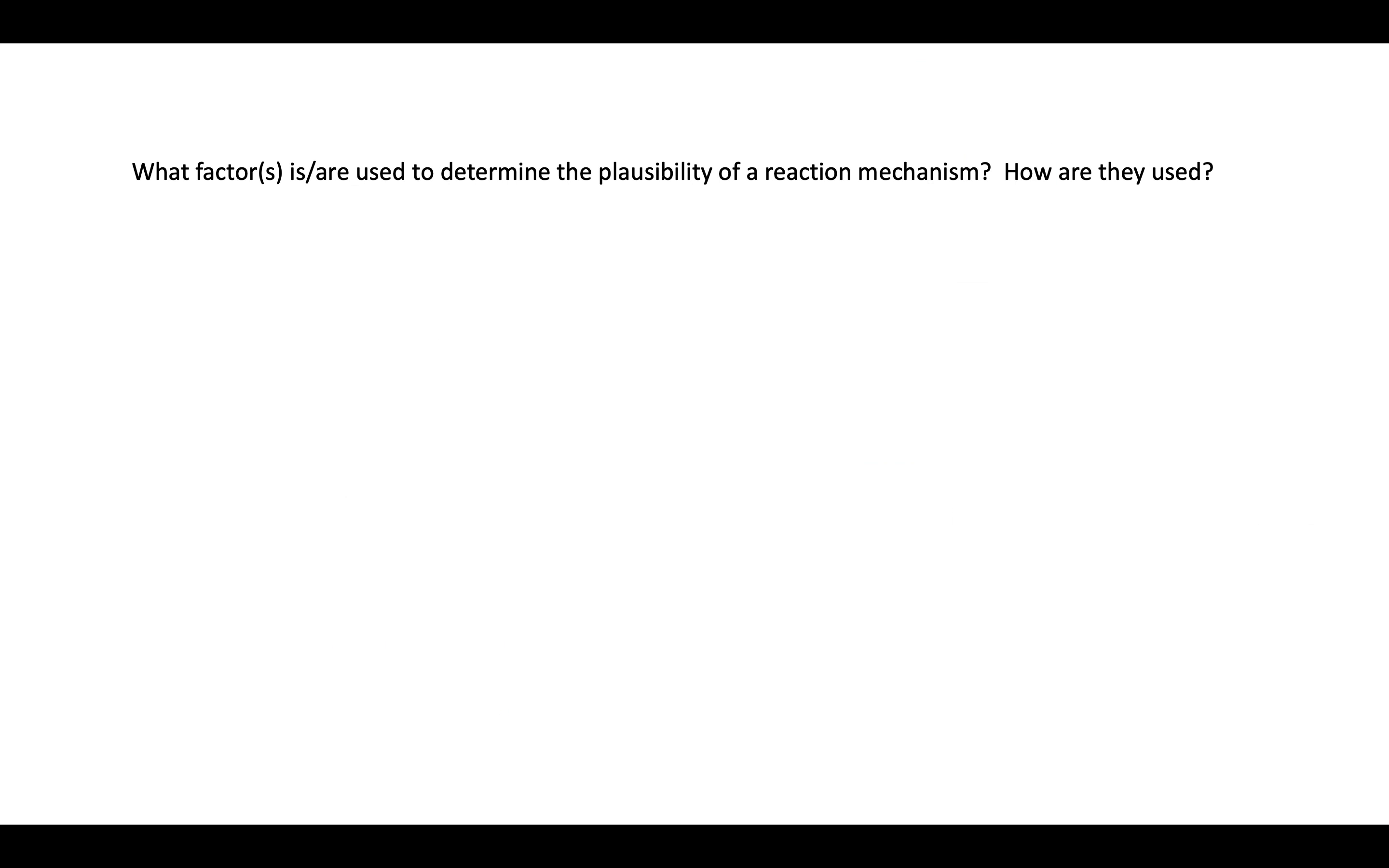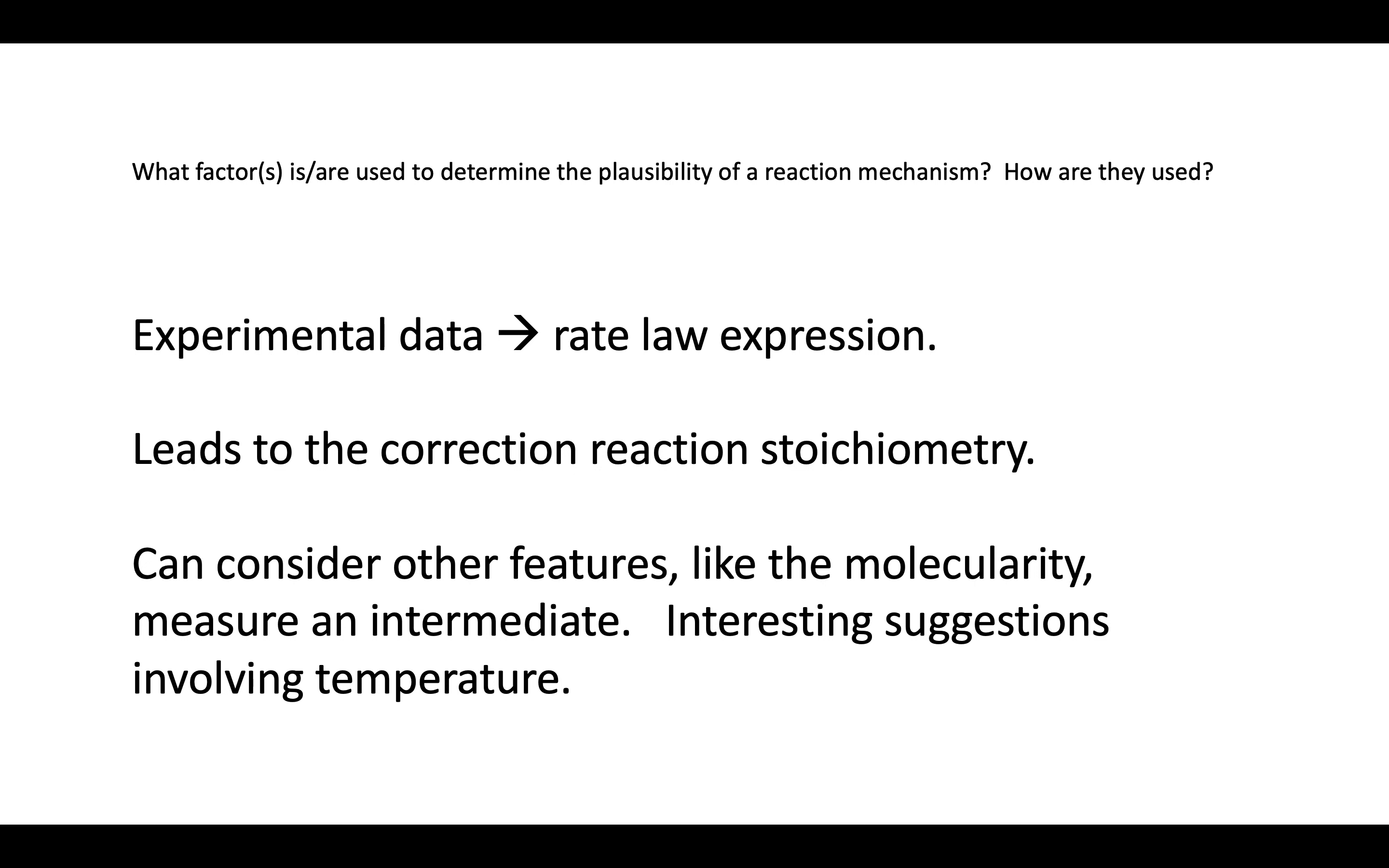Looking at the plausibility of a reaction mechanism, I was definitely looking for how experimental data leads to a rate log expression, and the proposed mechanism must be consistent with that rate log expression. It also needs to lead to the correct reaction stoichiometry. There's additional features that some folks talked about, thinking about, in terms of the molecularity, were one steps more or less plausible than others, maybe measuring an intermediate. Also, some interesting suggestions of how the temperature could be something that one would consider, but I was definitely looking for those first two, and the, more than just saying experimental data, experimental data leading to the rate log expression.